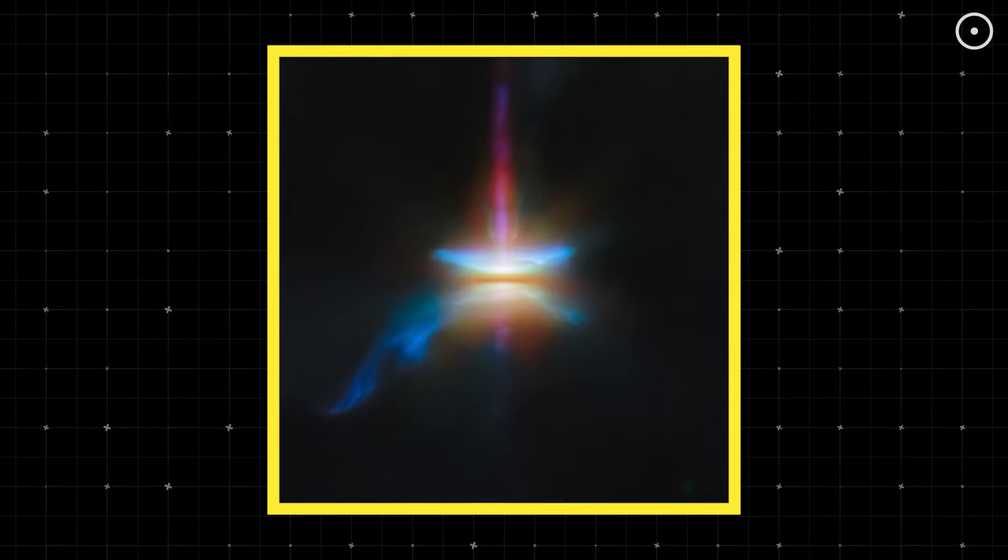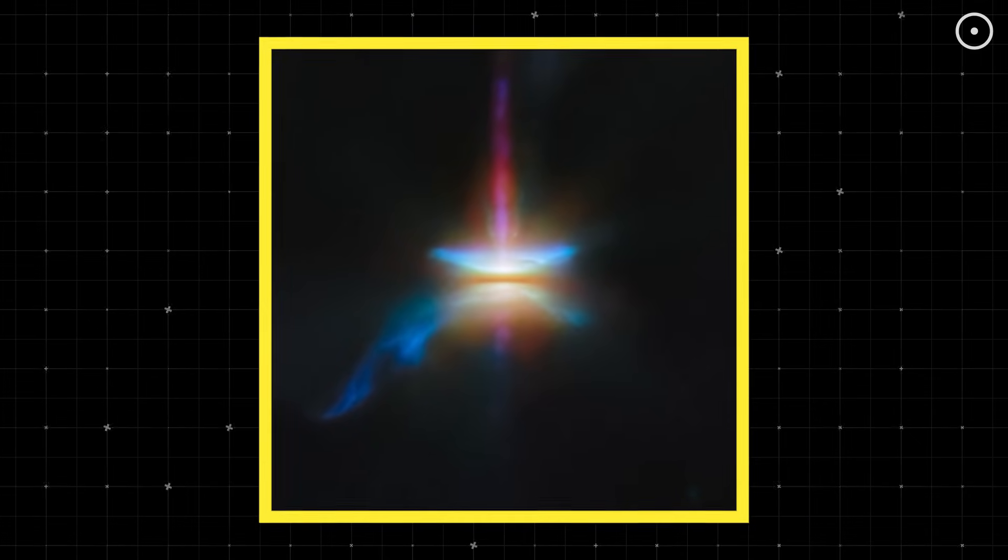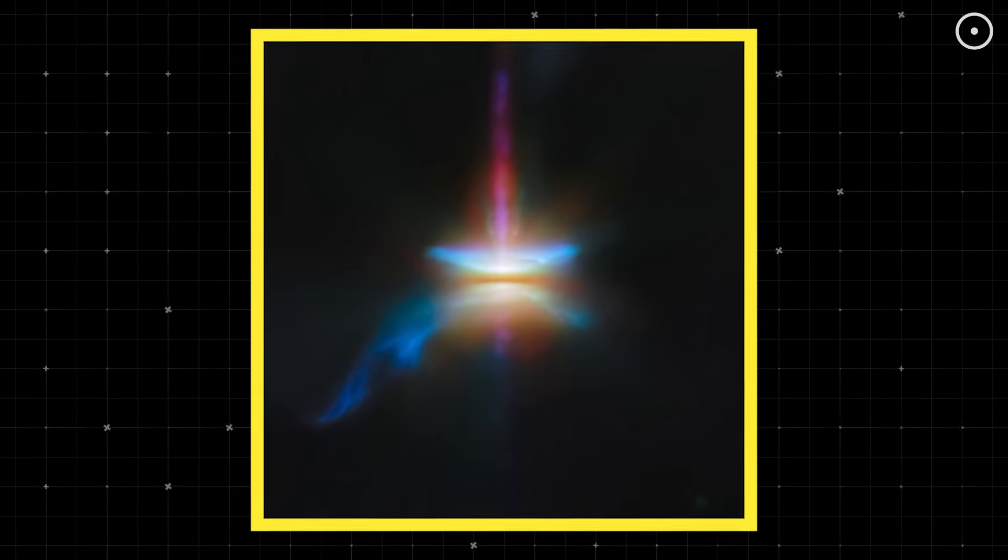Webb Telescope just captured this image of a star shooting jets at thousands of kilometers per second. What you're looking at is HH-30, a baby star in the process of being born, seen nearly edge-on.